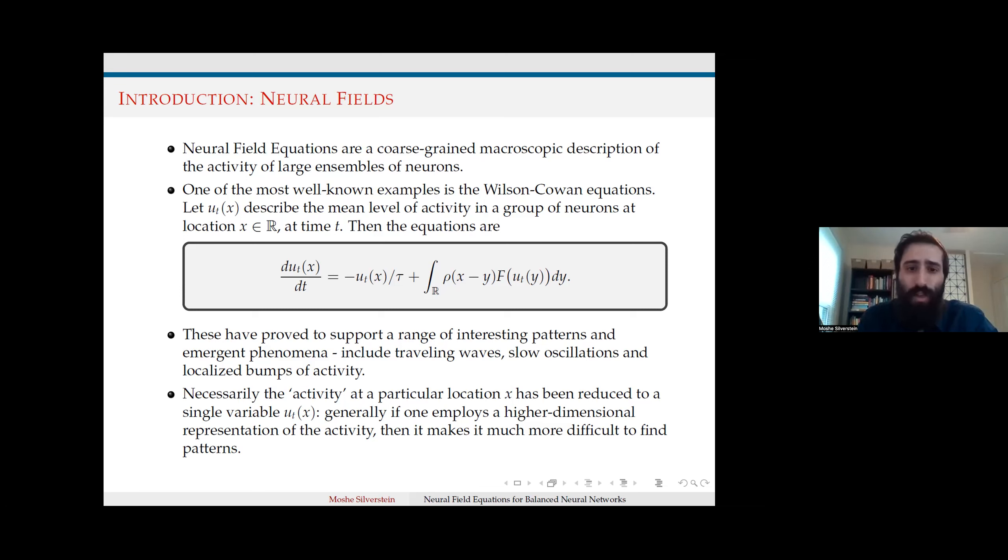In neuroscience, we use such equations to obtain a coarse-grained macroscopic description of the activity of a large ensemble of neurons. One of the earliest and perhaps best well-known examples are the Wilson-Cowan equations, where the mean level of activity in a group of neurons is captured by integral differential equations. These equations have been very successful in generating phenomena such as traveling waves and localized bumps.